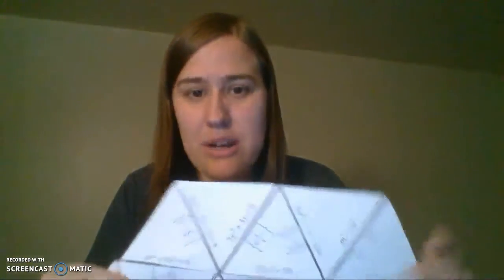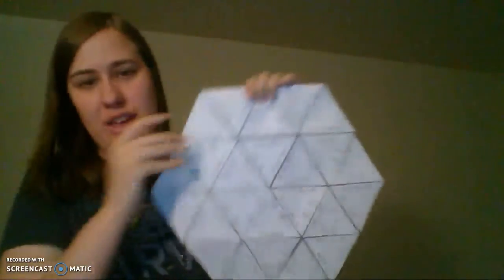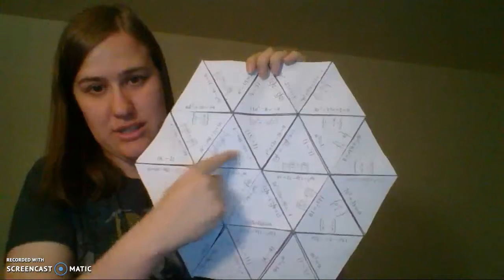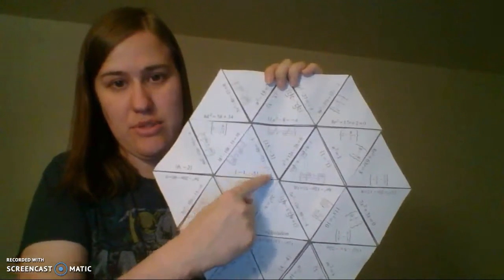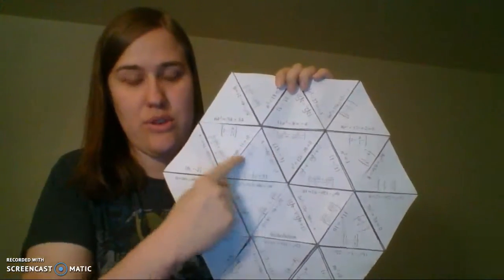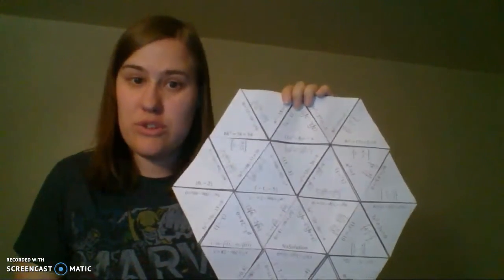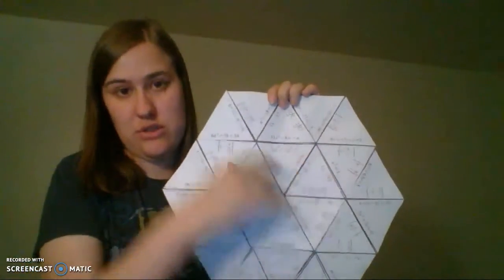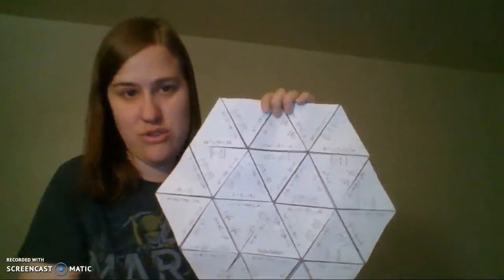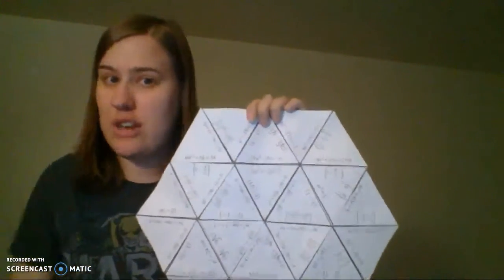If you wanted to do differentiation and give your least proficient students an easier puzzle, the program actually allows you to just do the centerpiece, these six. So if you wanted to do an easier puzzle for some of your students, this puzzle for some of your students, and then the puzzle with the distractors for some of your students, that would be a way of differentiating.